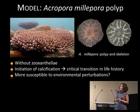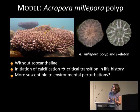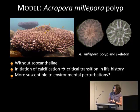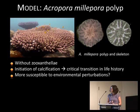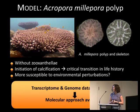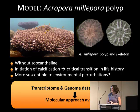To tackle this question, we chose primary polyps of Acropora millepora, as you can see here, for several reasons. The first reason is that they are still aposymbiotic, which simplifies the problem for data analysis. The second reason is that these organisms are just starting to calcify — this is a critical transition in coral life history, and those life stages are more susceptible to environmental perturbations. But the main reason is that we now have the transcriptome and genome databases, which opens a big door for molecular approaches such as large-scale gene expression analysis.